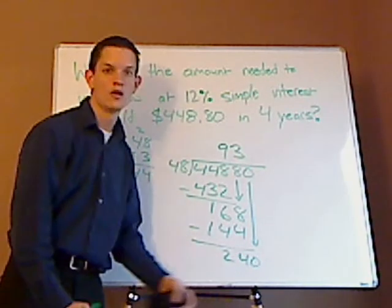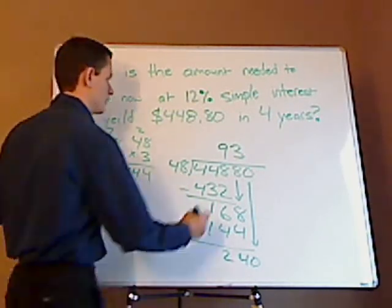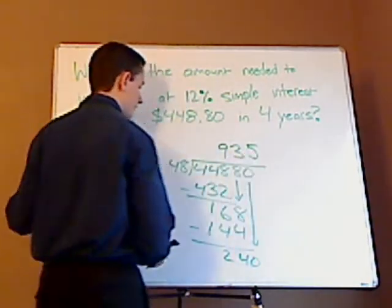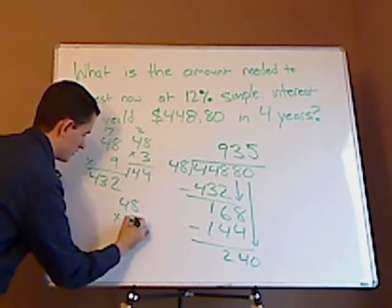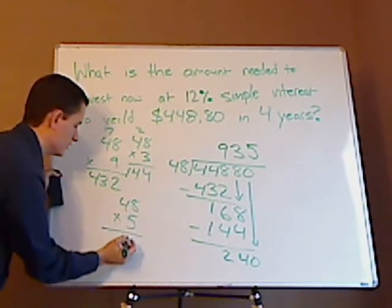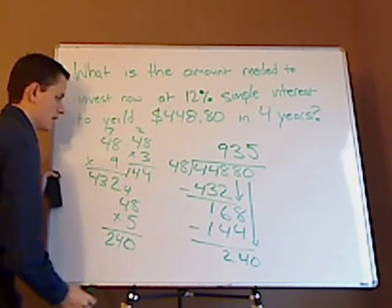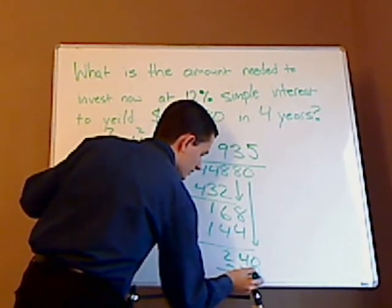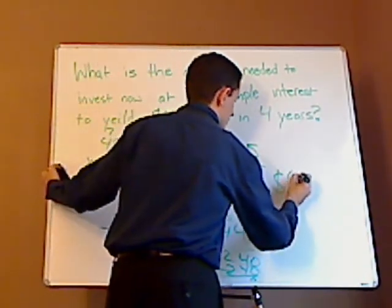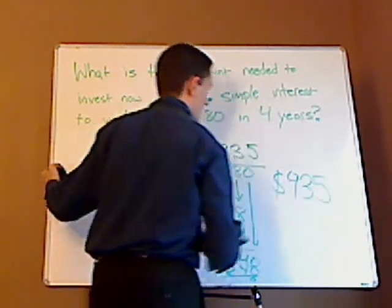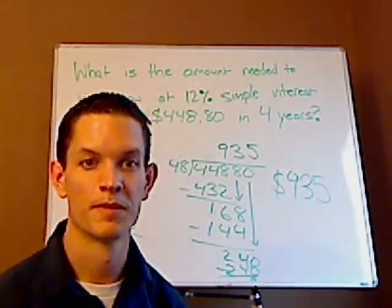Now, this ends in a 0. What times this will give you 0? 5, right? So let's try a 5. 5 times 8 is 40, carry the 4. 5 times 4 is 20, plus 4 is 24. Look at that. And then subtract, and that would be 0. So, the amount that you have to invest is $935 to get this interest in 4 years. And that's it.